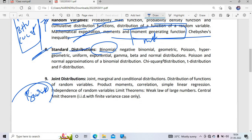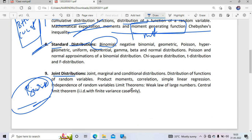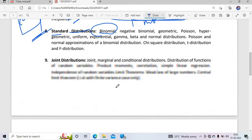Joint distribution is compulsory with one or two questions. Limit theorems are very important - law of large numbers and central limit theorem. Then correlation gets one or two questions, simple linear regression and multiple linear regression. Distribution of random variables questions are also very important. These are all highly important topics.